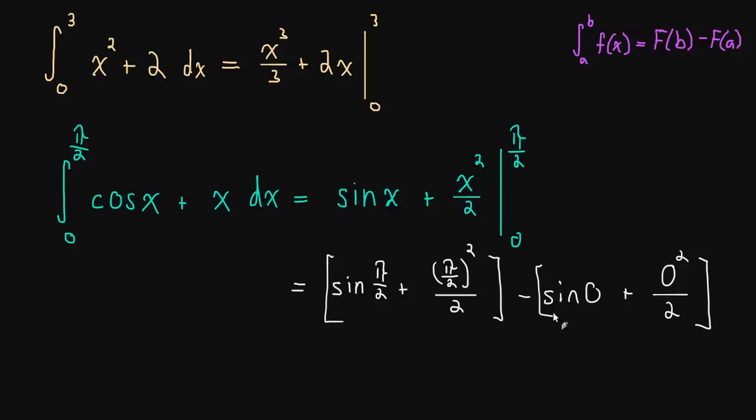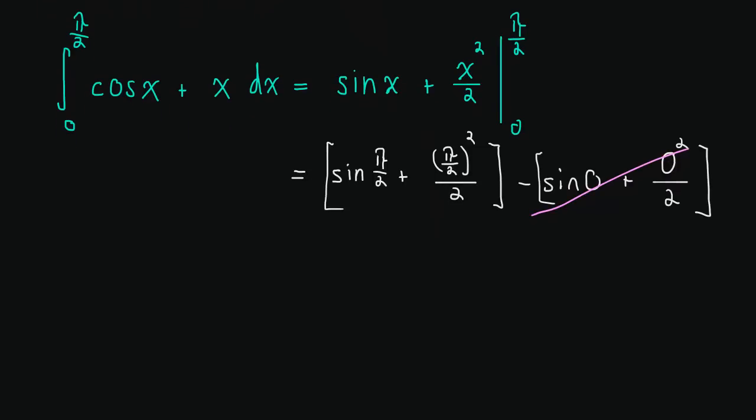So this is going to be the sine of pi over 2 plus pi over 2 squared over 2 minus the sine of 0 plus 0 squared over 2. Okay, well, lucky for us, this is easy enough to evaluate. The sine of 0 is 0. 0 over 2 is 0. And then what do we have left? Well, the sine of pi over 2, that's 1. And then pi over 2 squared, that's pi squared over 4 divided by 2 is pi squared over 8. Pi squared over 8. So that's our answer.